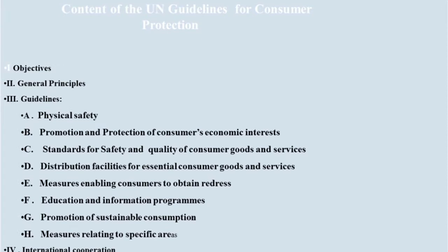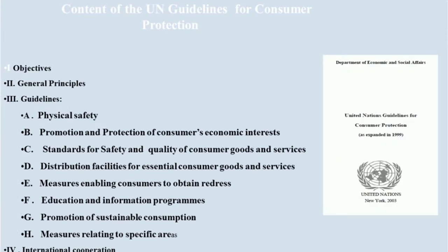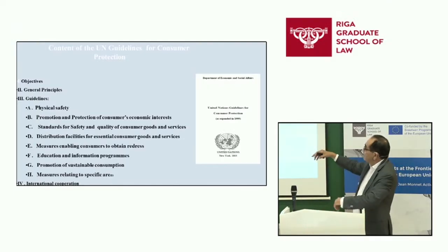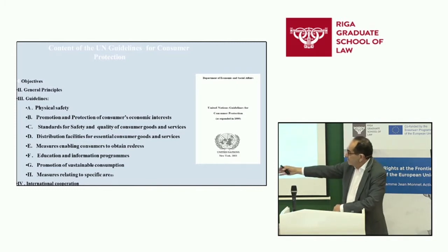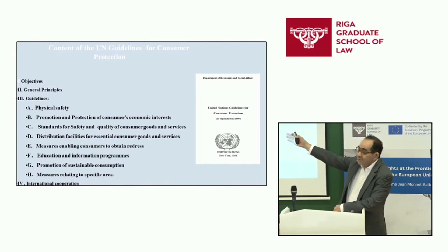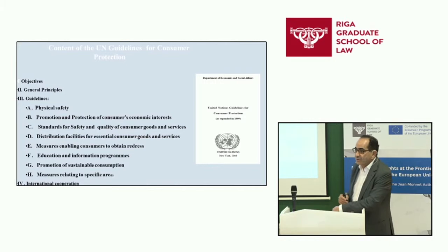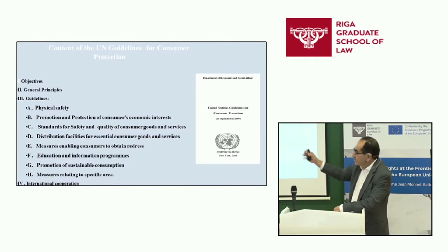What does the UN guidelines document actually look like? It's one of these UN-wide documents produced in the form of a resolution — a non-binding resolution adopted in 1985. It has four chapters: the first on objectives, the second has a set of general principles, the third has very short guidelines covering the eight rights we'll look at, and then one section on international cooperation.